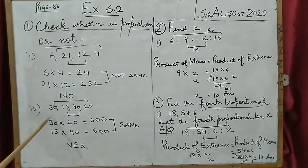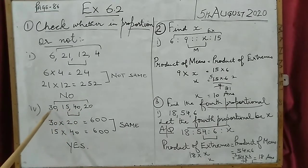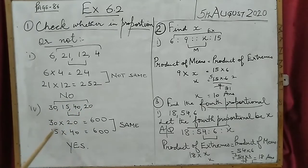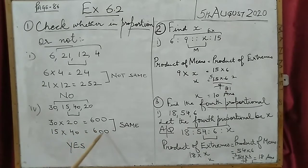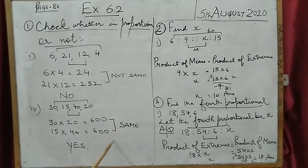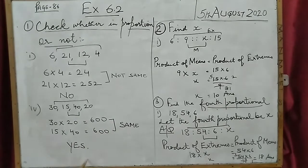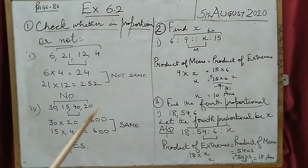Now take another example: 30, 15, 40, 20. Same way — take the first and last term together, and the second and third term together. Multiply: 30 into 20 is 600; 15 into 40 is 600. Both answers are the same, so the answer is yes — these numbers are in proportion.